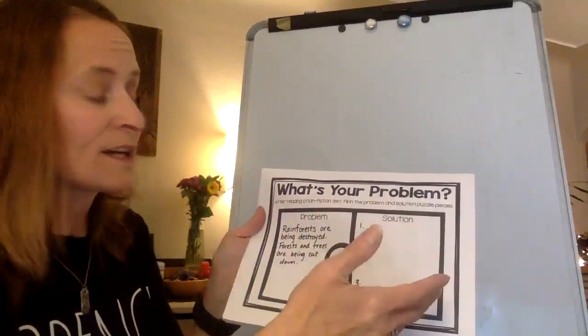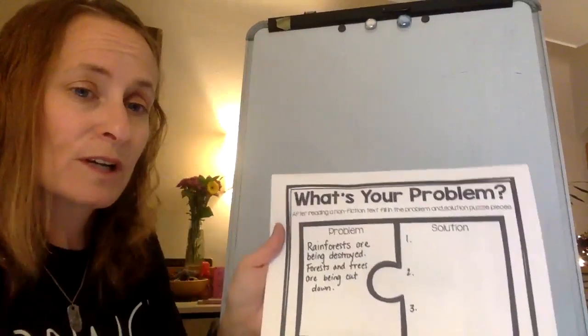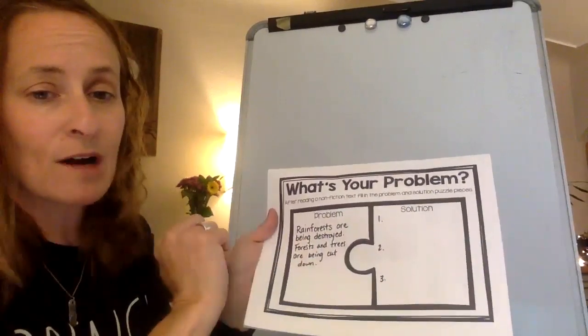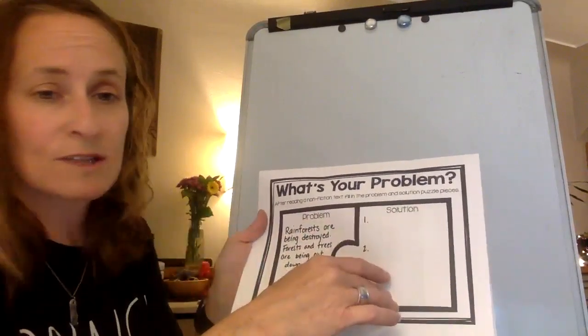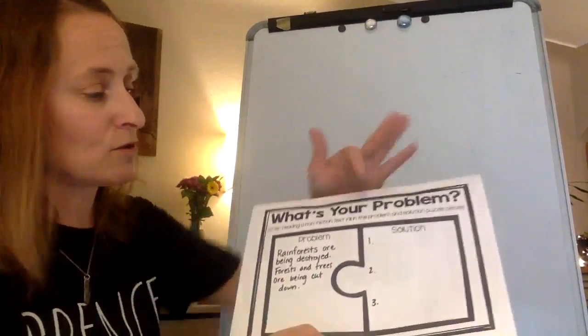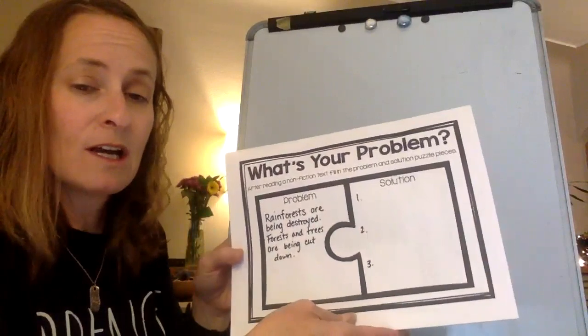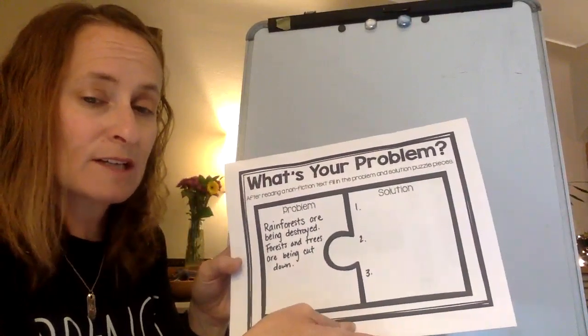I want you to go back and find what kind of solutions the article shares with the reader that people could utilize to solve that problem. It did give some suggestions towards the end of the article. You can do one, two, or three. There is actually a little bit more than three.